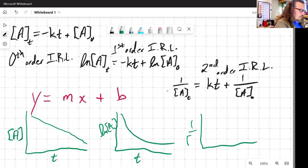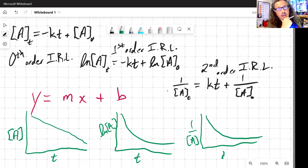And one over concentration versus time. And only one of those is going to be linear. Whichever one is linear tells us what the order is with respect to that reactant.